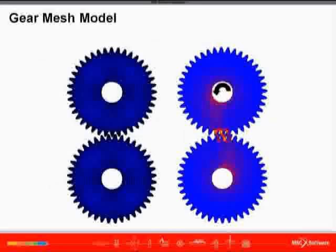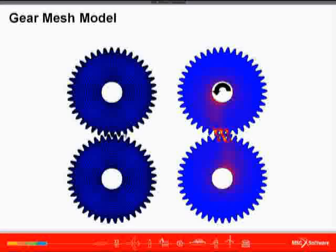The full gear is modeled instead of a sector to capture the correct torsional stiffness of the gear as the top gear rotates into the stationary bottom gear.